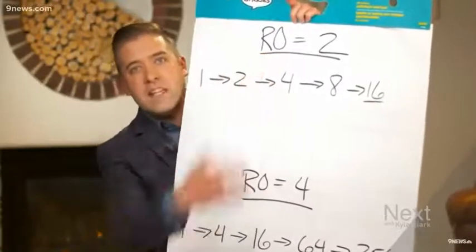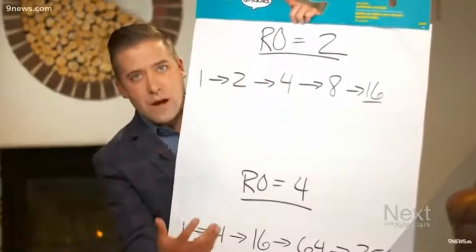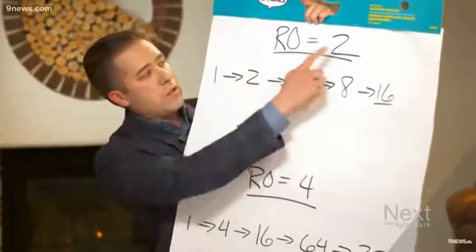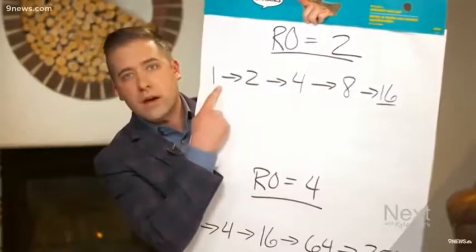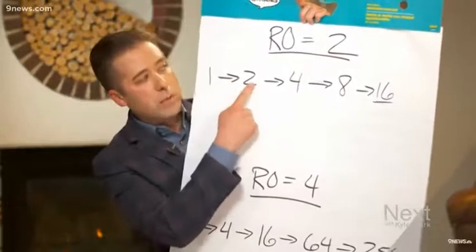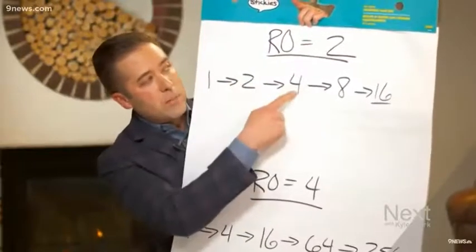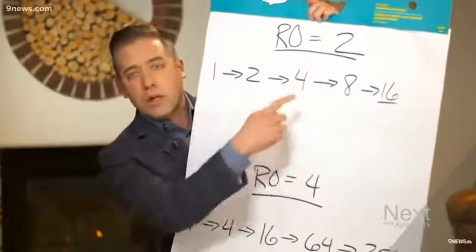This is the measure of contagiousness of the virus. And the whole idea is, an R-naught of two means that one person with the virus is likely to give it to two people. They give it to two people. Those two people give it to two people, and so on and so forth.